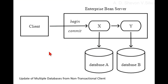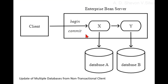The following figure illustrates such a scenario. A non-transactional client invokes an enterprise bean X, and the invoked method has the Required transaction attribute. Because the invocation from the client does not include a transaction context, the container starts a new transaction before dispatching the method on X.